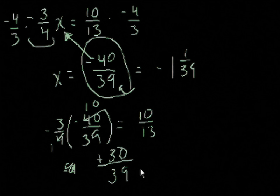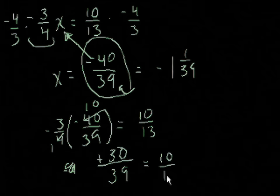And 30 over 39, if we divide the top and the bottom by 3, we get 10 over 13, which is the same thing as what the equation said that we would get. So we know that we got the right answer.